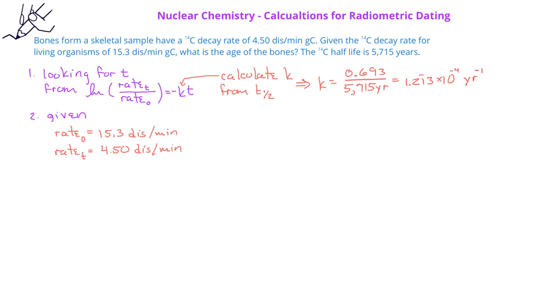We can now solve for t given this first order integrated rate law. We can rearrange it to isolate t, so we get the natural log of the ratio of the current rate divided by the initial rate, and that is divided by minus k, and that will give us the time t.